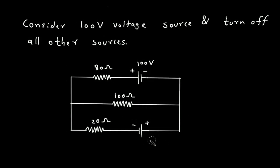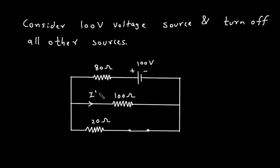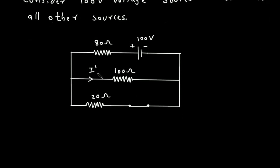Now if we turn off this 50 volt voltage source, it will be short circuit. Here we can see the positive terminal is here and negative terminal is here. The current flows from positive terminal of battery to negative terminal. So the direction of this current will be like this. Let's say this is current I'. Now we have to find I', so we will use current division rule.